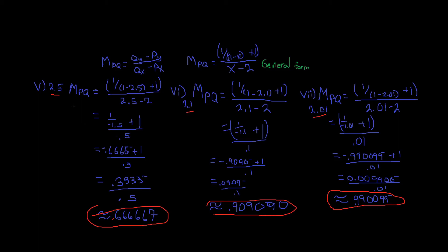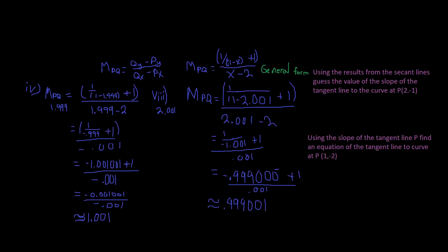The whole point of doing this is to get our points closer and closer to P. What happens with a limit is called converging — these secant lines converge and become the tangent line. For x = 2.001, we plug into our point-slope form and get the corresponding slope of the secant line.